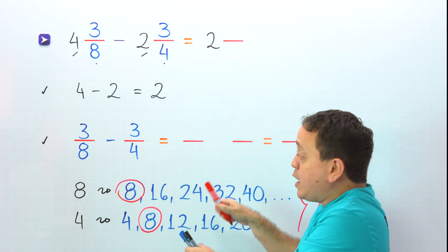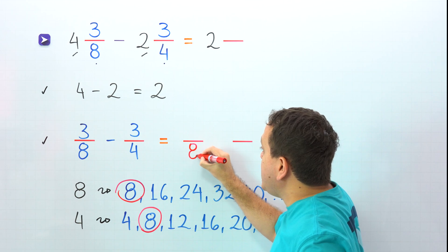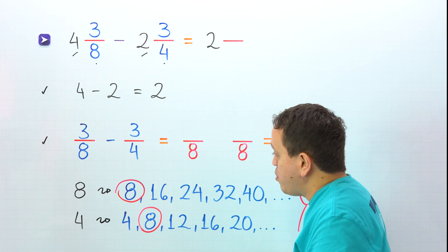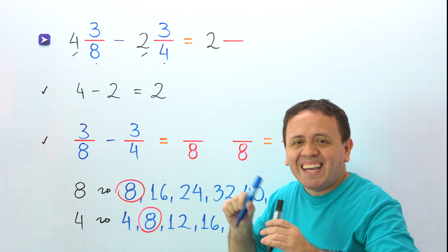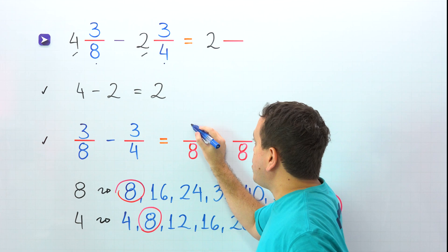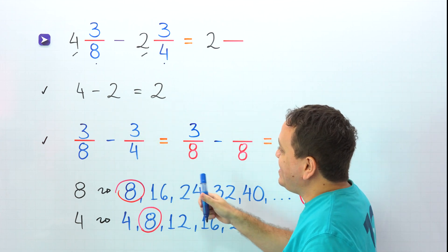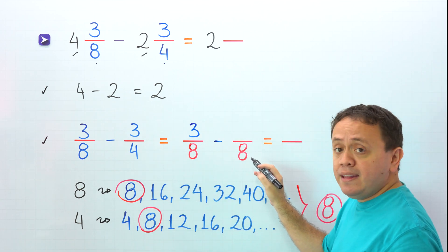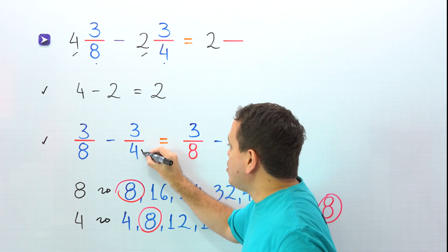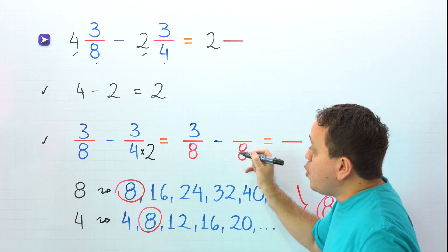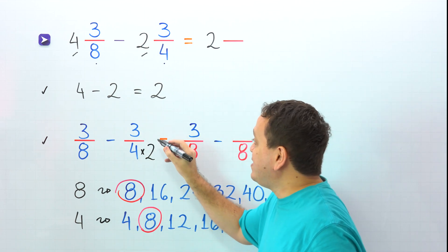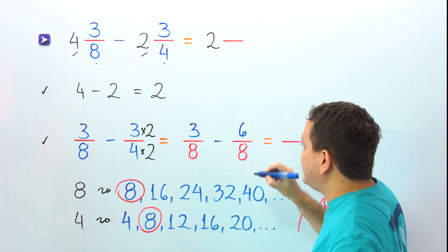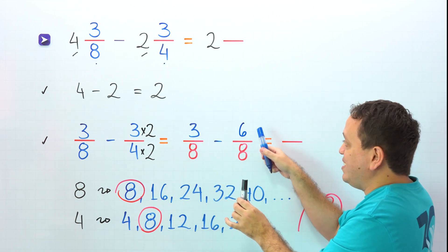For each fraction, we need an equivalent fraction with a denominator of 8. 3 eighths already has a denominator of 8, so we don't need to make any changes — we just put 3 eighths. Then we put the minus sign and continue with 3 fourths. By what number should we multiply 4 to get 8? By 2, because 4 times 2 gives us 8. Whatever we do to the bottom, we must do to the top, so we multiply by 2, and 3 times 2 gives us 6. Now we need to subtract 3 eighths minus 6 eighths.